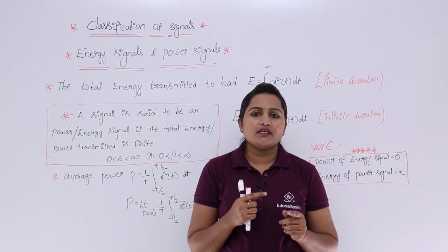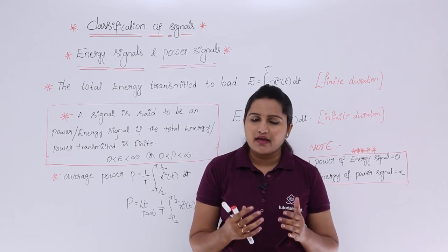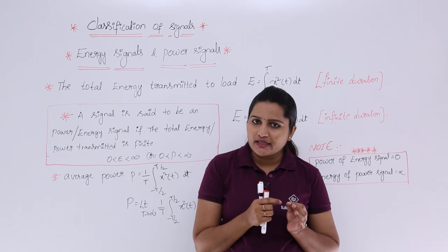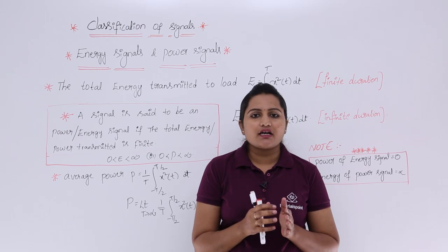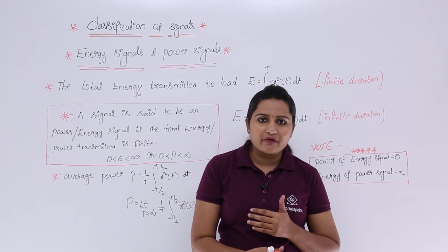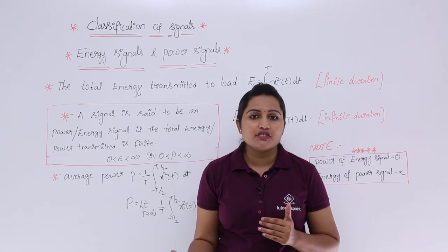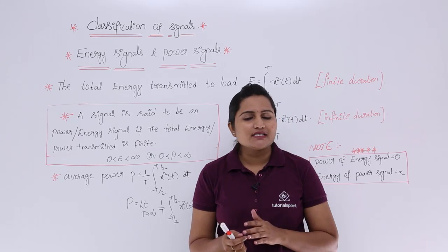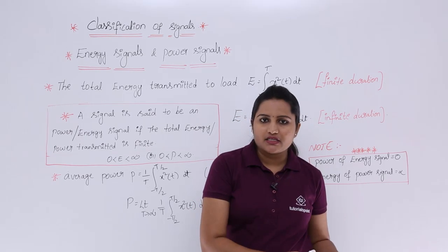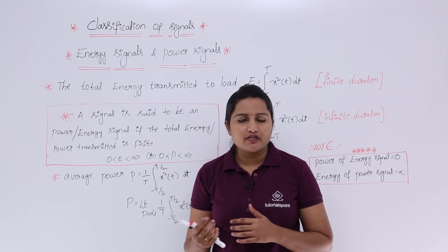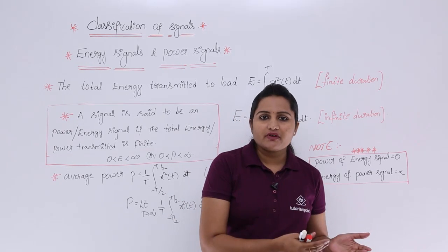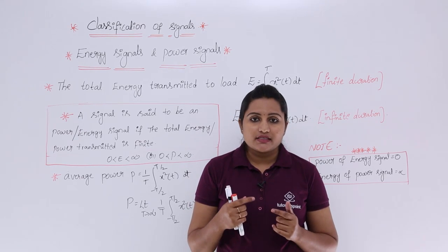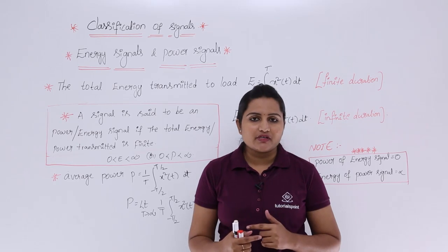At a time both conditions cannot be finite simultaneously. If a signal is said to be an energy signal, it definitely cannot be a power signal. If a signal is said to be a power signal, it definitely cannot be an energy signal. So a signal cannot be both energy and power signal at a time — it may be either one, or sometimes neither.